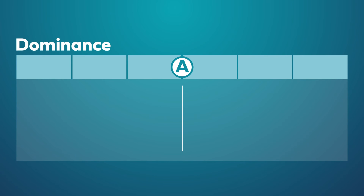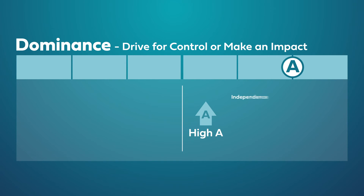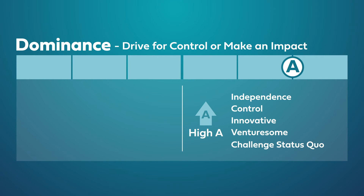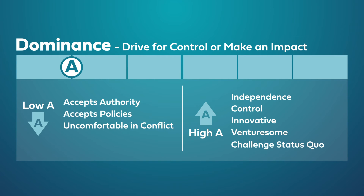Dominance, identified by the letter A, is the drive that someone has to take control or make an impact on one's own environment. A person with a high A values independence and control above all — they are naturally innovative, venturesome, and have a tendency to challenge the status quo. While a person with a low A readily accepts the authority of others, including situations when directives are set by company policies, procedures, or systems. Low A individuals can often be uncomfortable in the face of interpersonal conflict and desire harmony in the workplace.